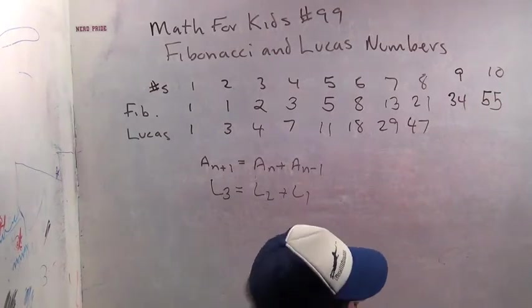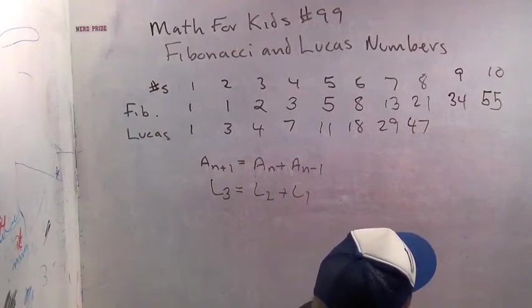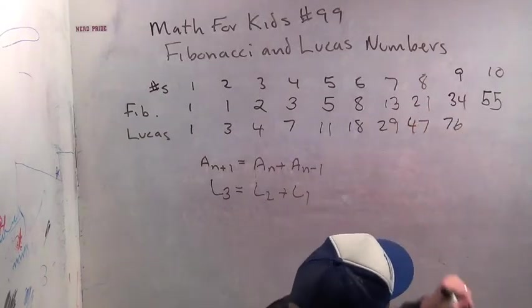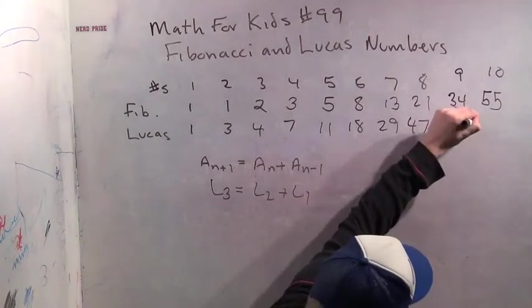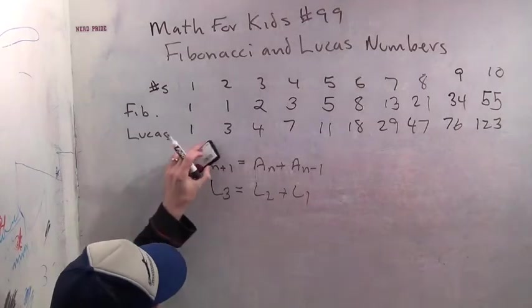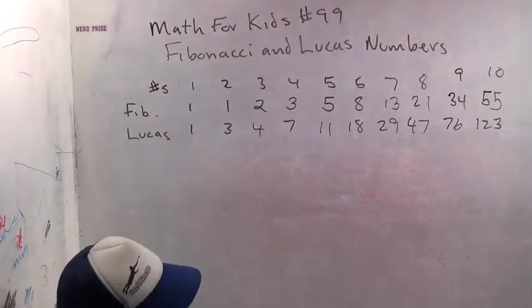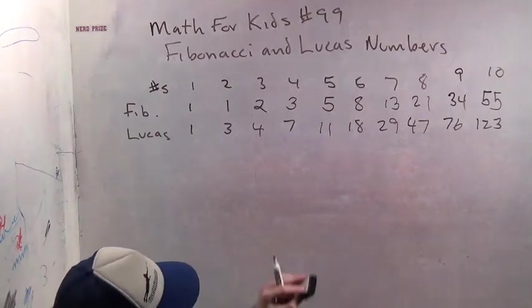How about 29 plus 47? That's 76. And 47 plus 76? 123. So Lucas numbers get, even though they start kind of similar, instead of 1, 1, they just start 1, 3. Now, they get big fast, but that's okay. It's okay to get big fast.